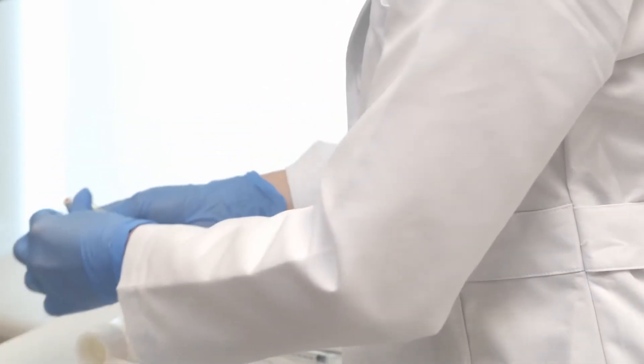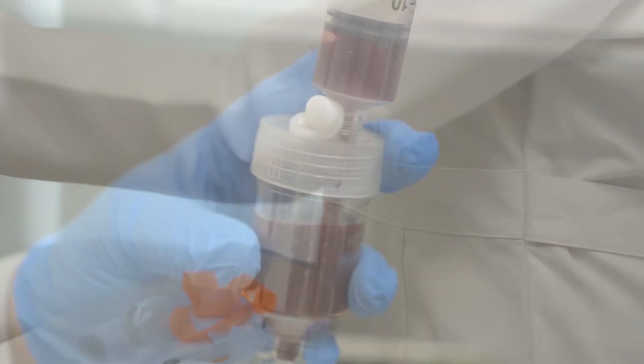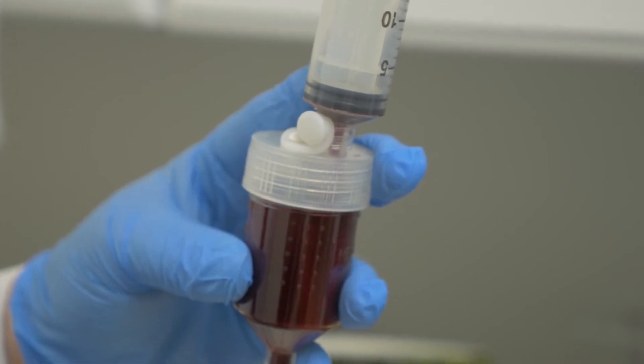The 30 ml syringe containing 23 ml of whole blood and 2 ml of sodium citrate are now ready to be transferred into the World PRP hourglass.